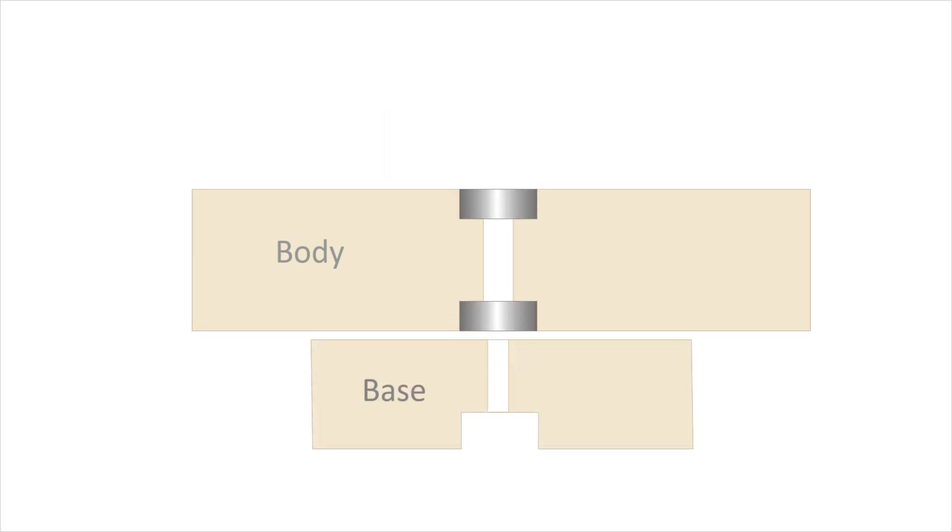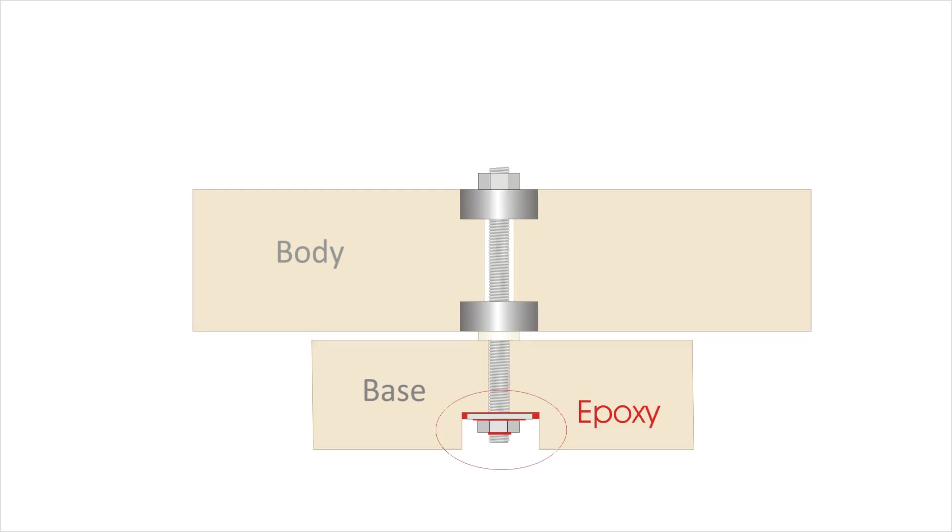In the round base, create a recess in the bottom to accommodate a nut and a washer, and then drill an 8 millimeter central hole. A threaded rod forms an axle on which the upper piece rotates. Epoxy this whole axle assembly in place into the base.